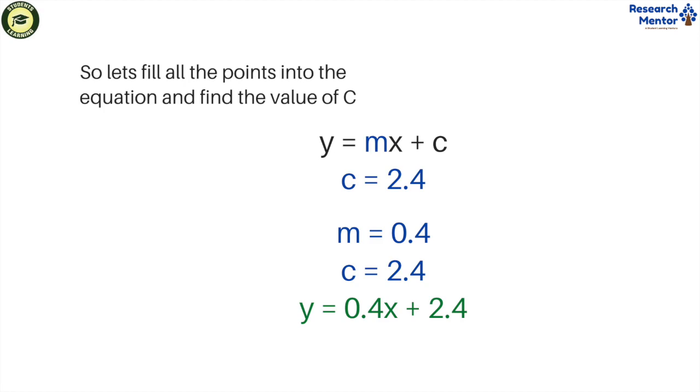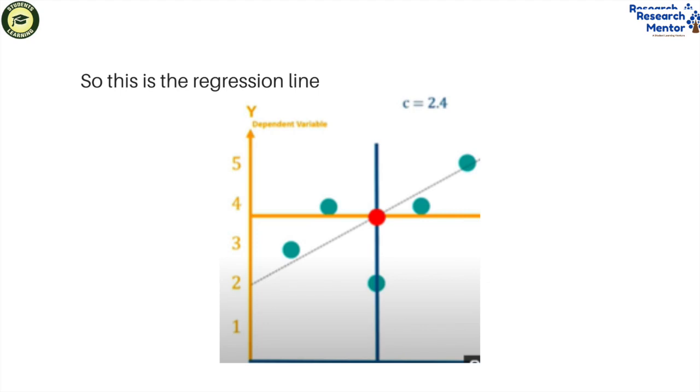And the value of c equals 2.4. So the equation y equals mx plus c becomes y equals 0.4x plus 2.4. So this is the regression line we can show in the figures.